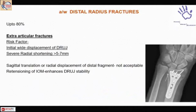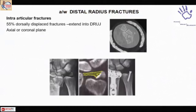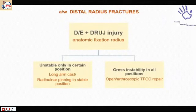When DRUJ instability is associated with a distal radius fracture, the incidence is almost 80%. Risk factors at presentation include wide displacement or severe shortening of the radius — that is when you expect the complex to be torn. When fixing these, parameters like radial shortening no more than 5 mm, inclination, and angulation must be restored so the ligaments can heal. Intra-articular fractures have a significant role in instability, so anatomical fixation always comes first. After anatomical fixation, reassess: if instability is in a single position, pin or cast it; if multidirectional or bidirectional, go for open or arthroscopic TFCC repair in the same setting.